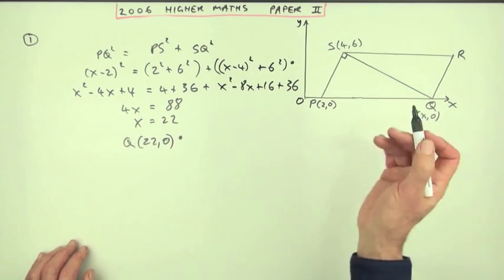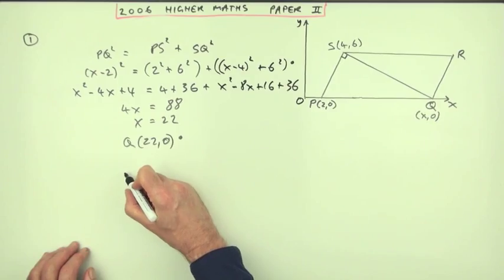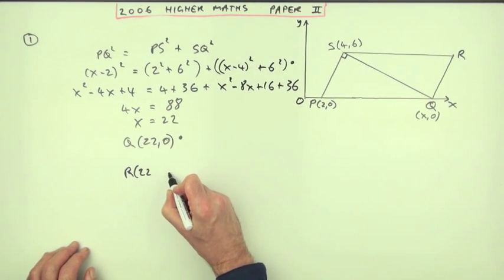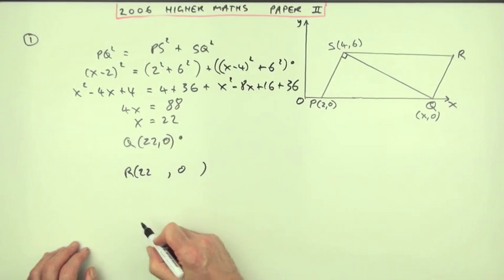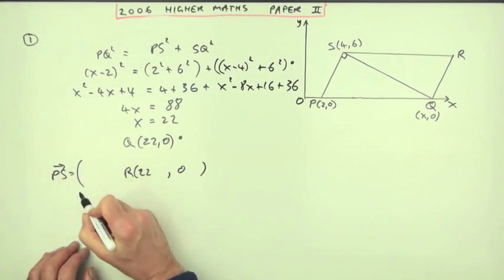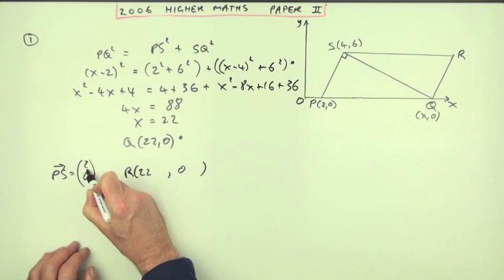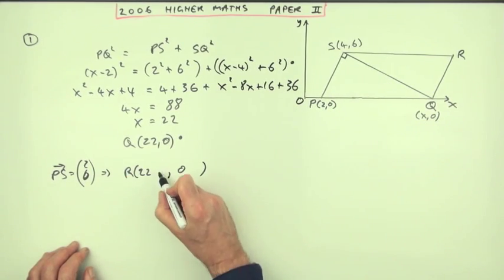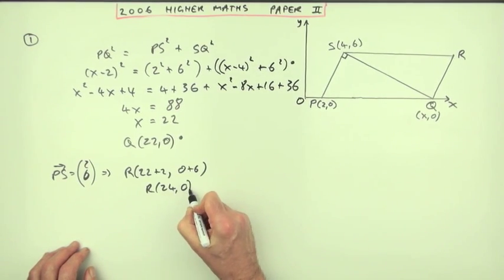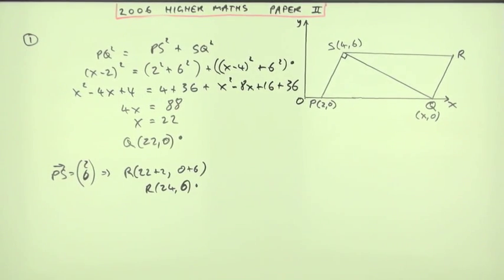And then to find R, now it's just the same as before. So R is going to be, well, Q was at 22,0. And since PS was 2 along 6 up, that means that R's going to be that plus 2, that plus 6, so R's going to be 24,6. That would be the mark number 3.